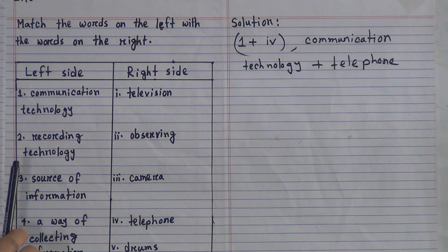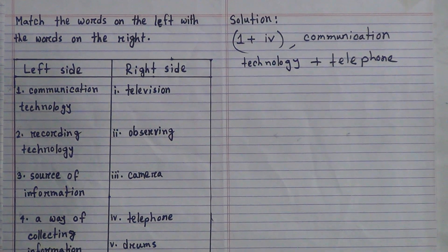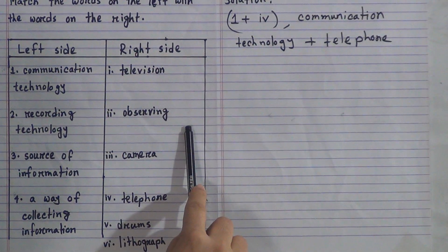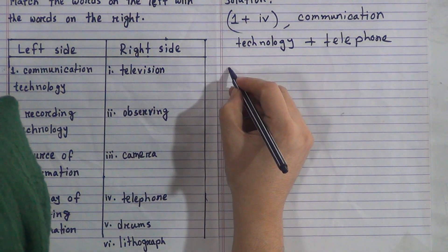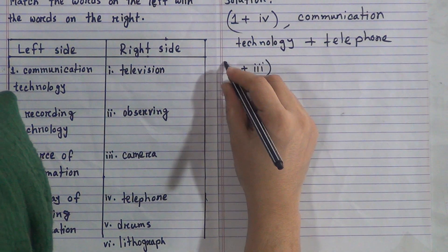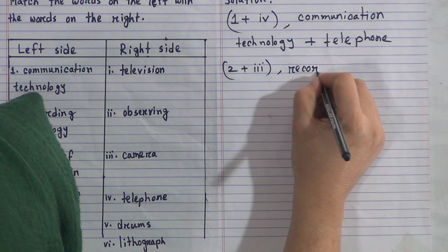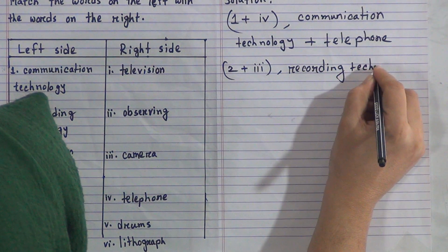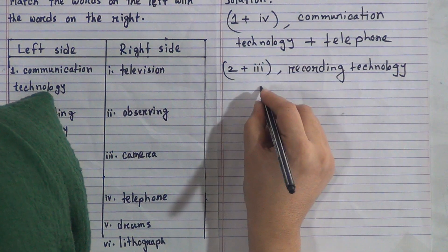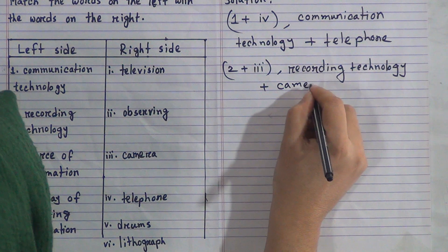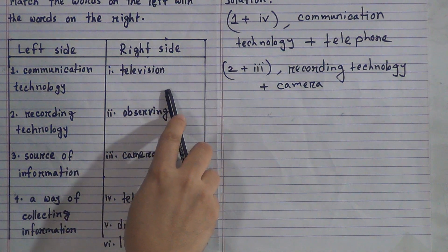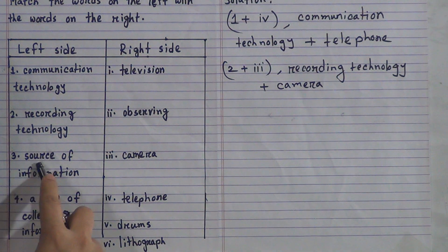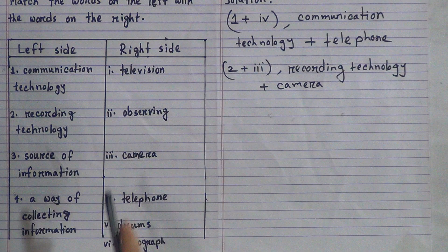Number 2, recording technology: television is not the correct answer, observing is also not correct — camera, yes. Recording technology will be matched with number 3, camera. So we write: two plus three, camera is a recording technology. Number 3, source of information: from the options, television is the right answer. So source of information will be matched with number 1, television.